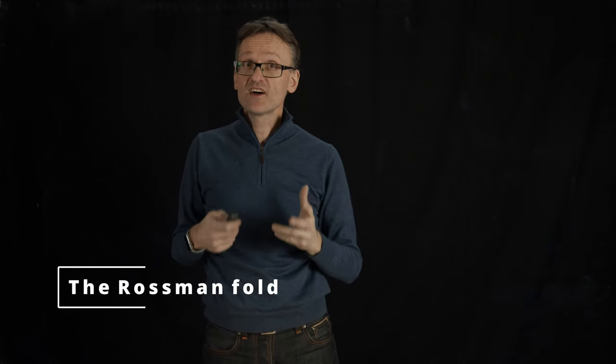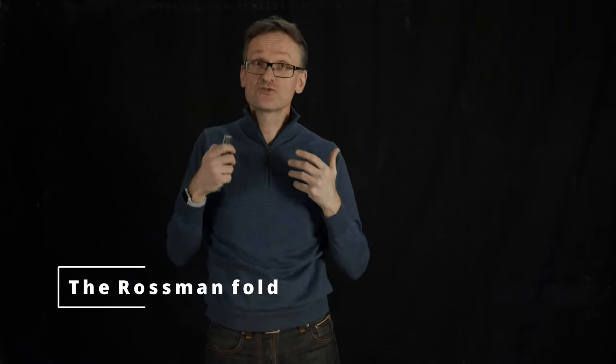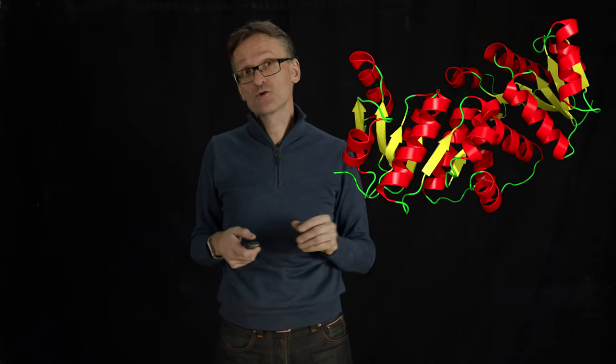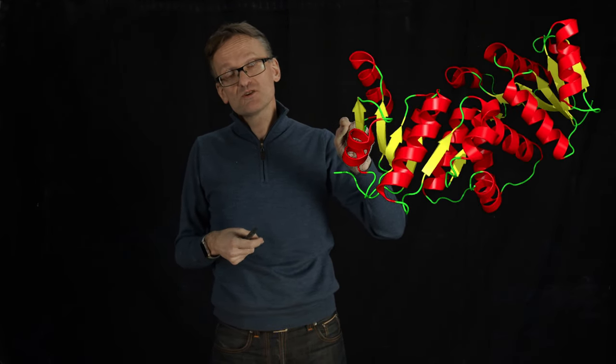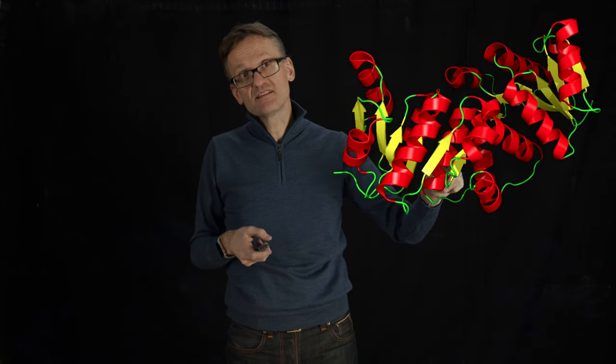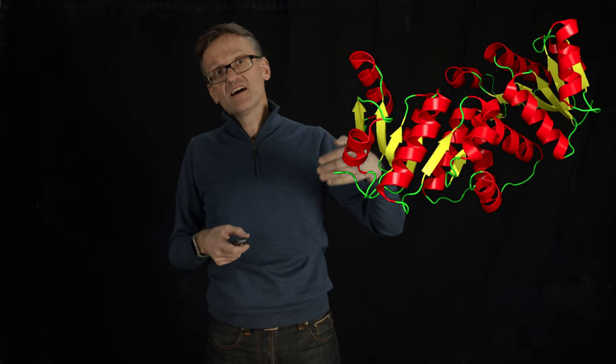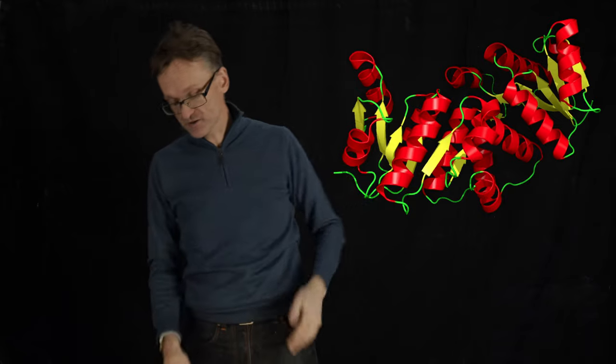So that second protein had another important motif or super secondary structure that I'm going to show you. This was this layer of beta sheet where all the strands are parallel and it's kind of wedged between two layers of helices.